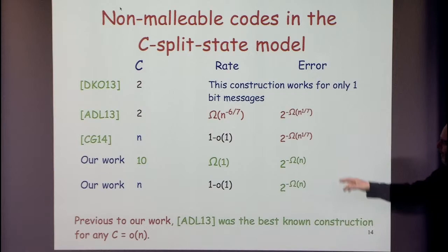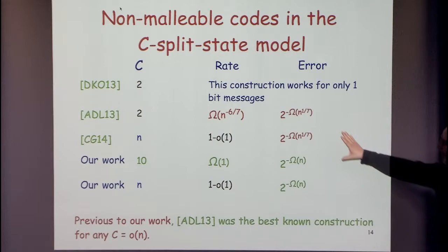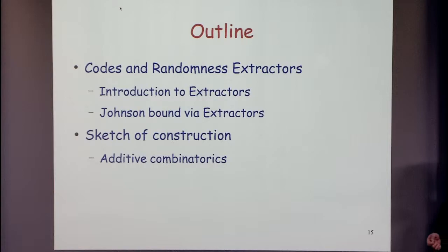Our main result shows that with C = 10, we can achieve constant rate and exponentially small error. We can also improve the bound of Mahdi and Venkat by getting exponentially small error instead of n to the 1/7th. Prior to our work, the best known was polynomial rate for any C which is little-o of n. The main result is this constant rate non-malleable code.